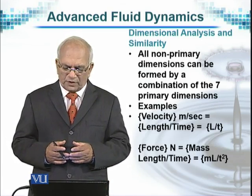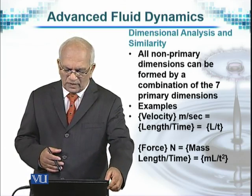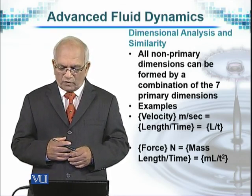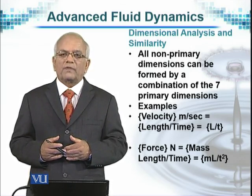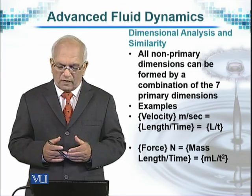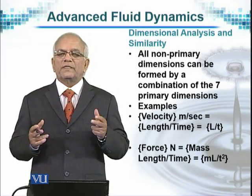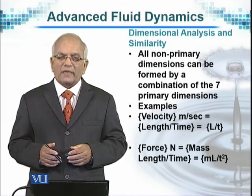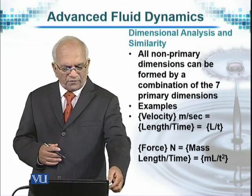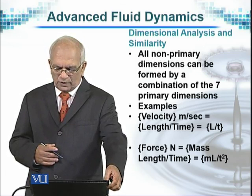All non-primary dimensions can be formed by combination of seven primary dimensions, as we have said before. For example, if we are discussing velocity, then velocity is distance over time. The unit for distance is meter and for time it is second, so meter per second gives us L over T. Similarly, force has the units ML over T squared, where M is the mass.